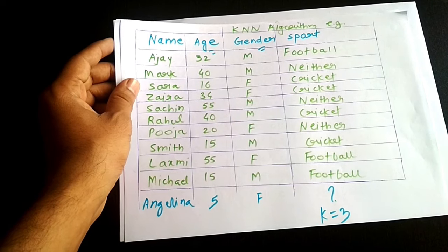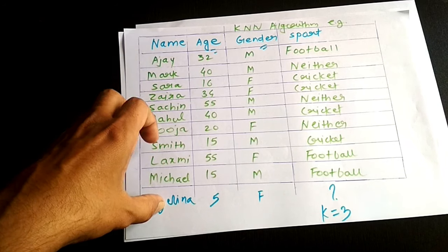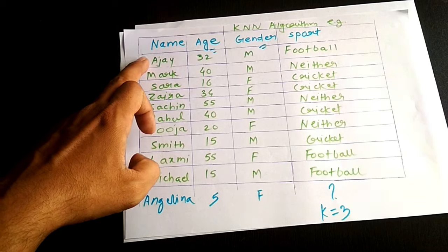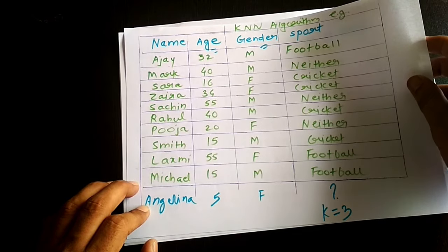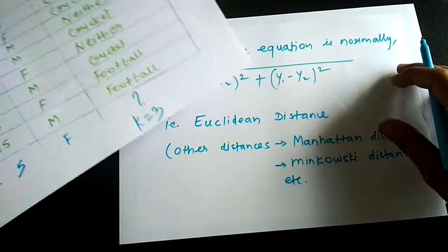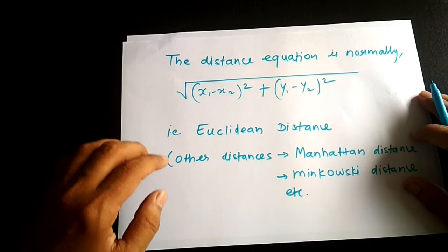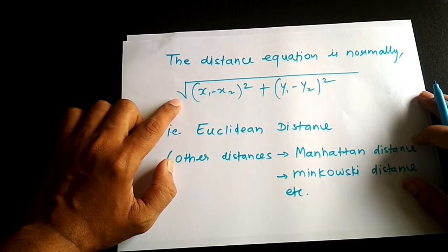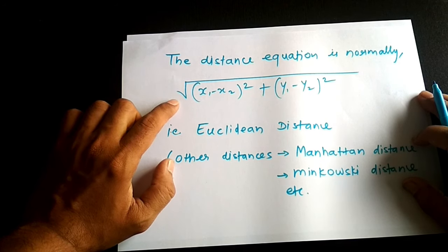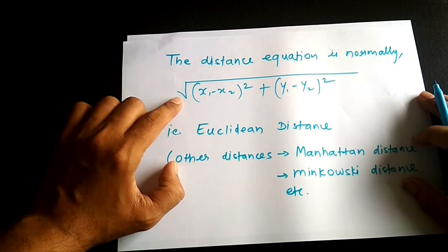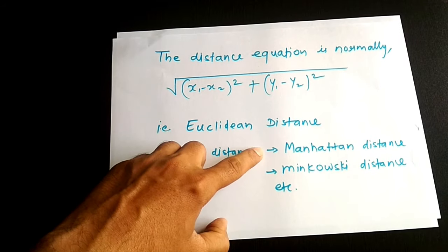KNN will find the distance of Angelina from each point in the reference data using Euclidean distance. The Euclidean distance formula is: the square root of (x1 minus x2) squared plus (y1 minus y2) squared. You can also use other distance metrics like Manhattan distance or Minkowski distance.